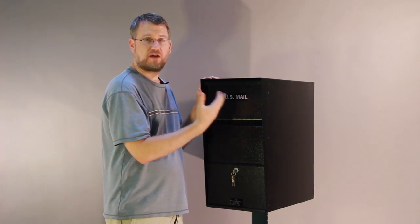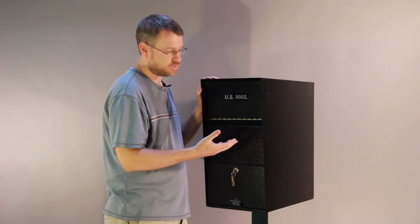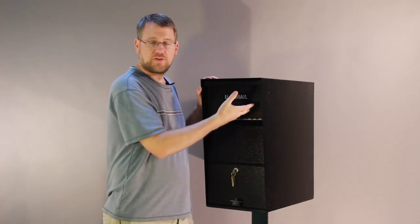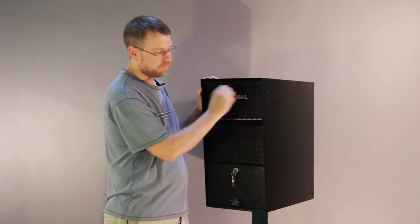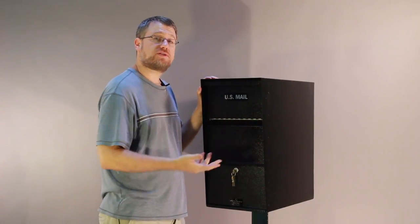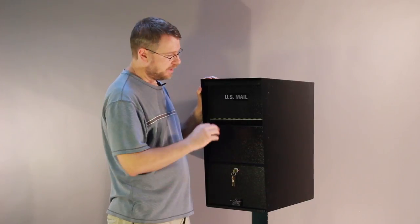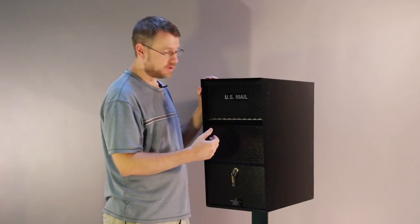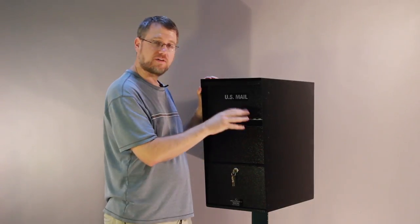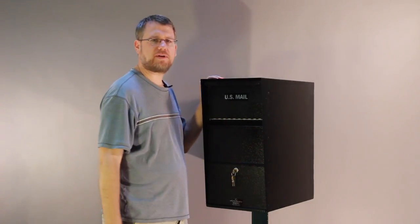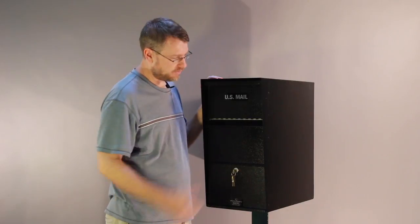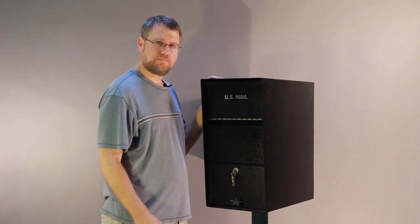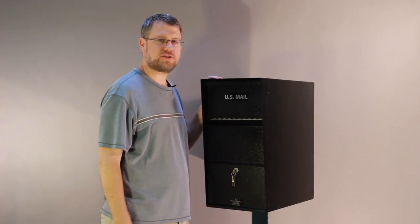As you can see, it has a U.S. mail label across the front. If you're using this as an office drop box, we can either not include that or you can peel that right off. There's also options for lettering. We can put your address on the front or the side of this, or drop box, office drop box, or your business name on the front or on the side.